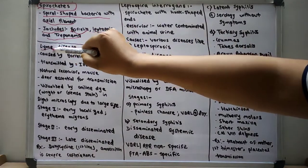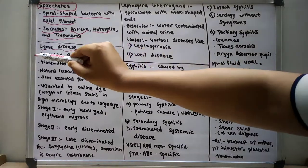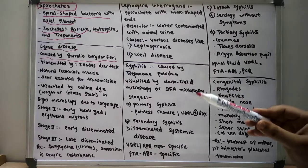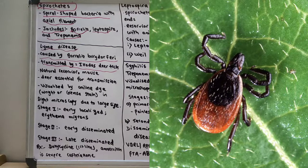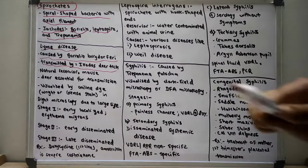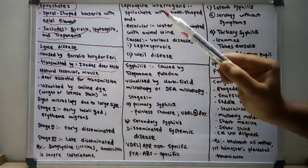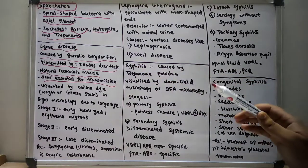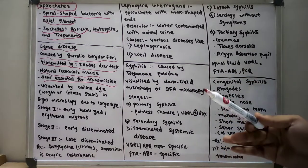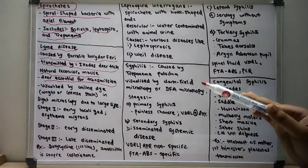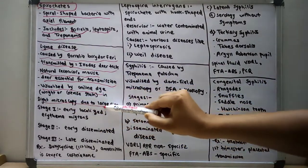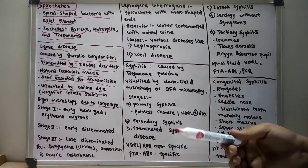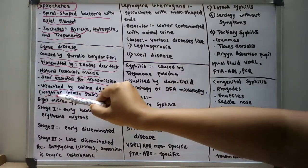First, let us talk about Lyme disease. Lyme disease is caused by Borrelia burgdorferi. It is transmitted by the Ixodes tick, which you can see in the picture shown. The natural reservoir of this bacteria is the mouse, and deer is essential for transmission. Borrelia is a very large bacteria and can be directly visualized by aniline dye under light microscopy, and also by the Wright or Giemsa stain.